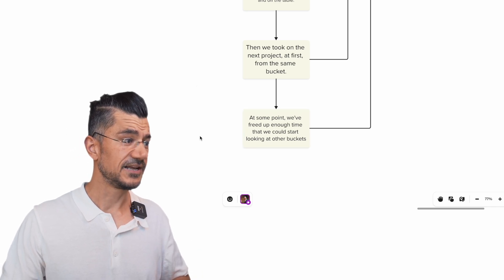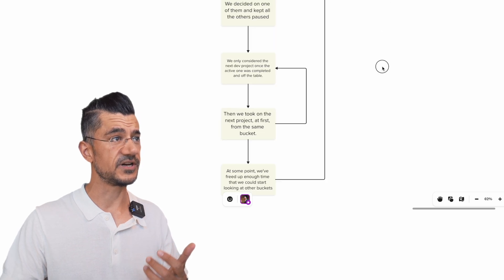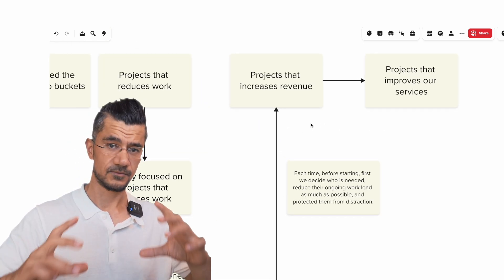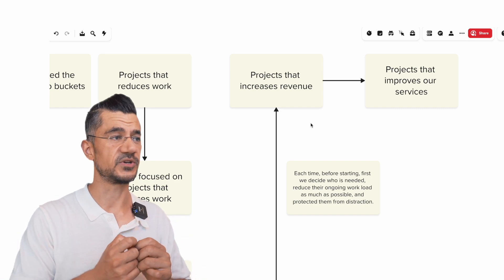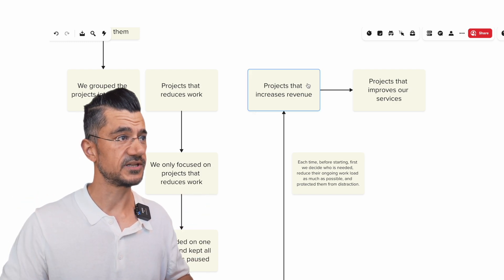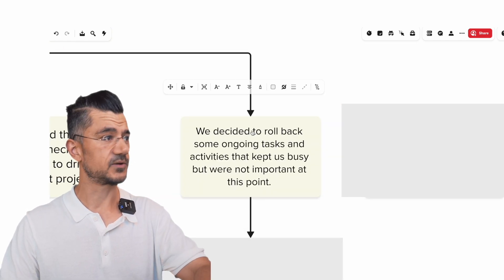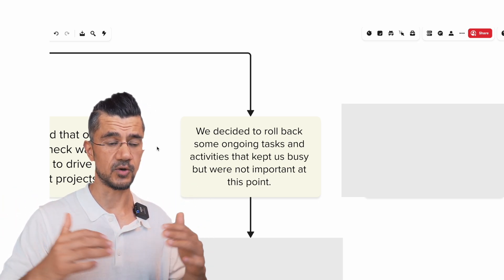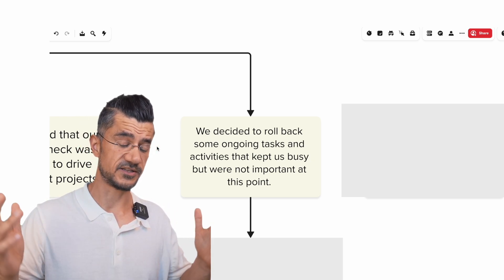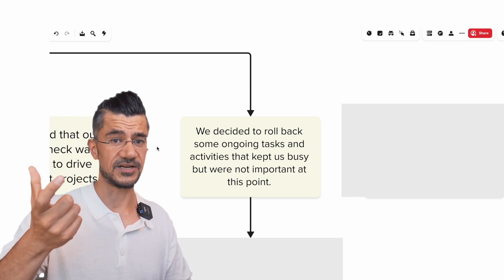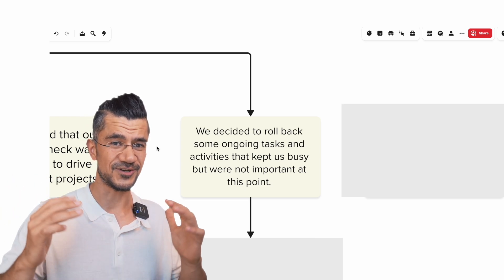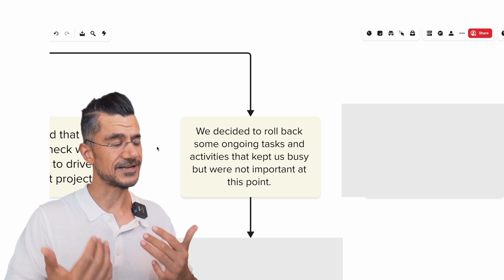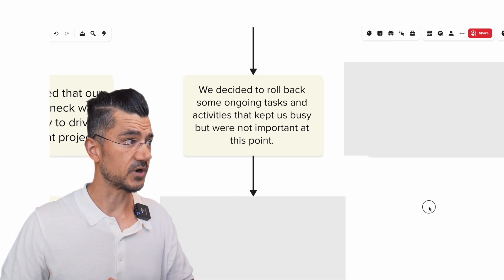When that project was completely finished, only then did we take on the next — again, one at a time. We looked at whether the same people were involved or different ones, because the bottleneck was the rate of driving development projects through, not necessarily a specific person. At some point, we had gone through this loop enough times that we freed up enough time to focus on revenue instead. We also rolled back a lot of smaller and larger ongoing tasks. Honestly, if you're stuck and don't know where to go, just slice off a ton of work — you need to take a step back in order to take two steps forward.